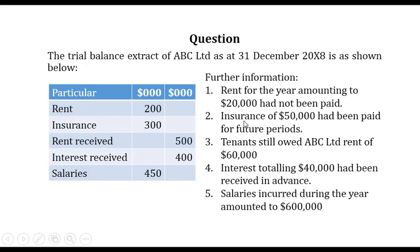Here is our question. The trial balance extract of ABC Limited at 31st December 20X8 is as shown. This is just an extract, so we have included rent, insurance, rent received, interest received, as well as salaries.